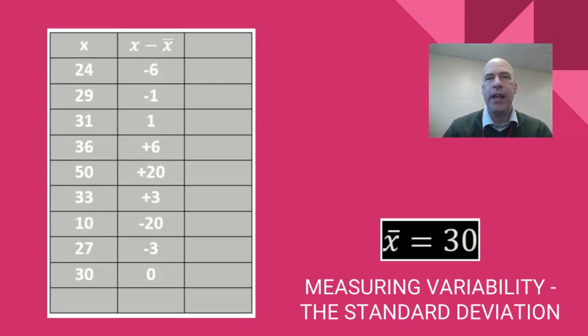Now the problem with this data set is we have all these positive and negatives. Think about if we wanted to do something collectively with these numbers. If you add them all together you have positives and negatives. They're all going to add up to zero. So this column on its own doesn't really do much for us. So what we'd like to do is somehow be able to summarize these deviations.